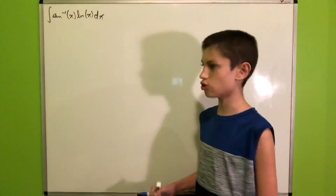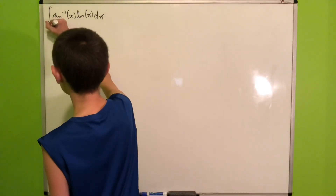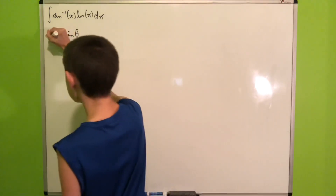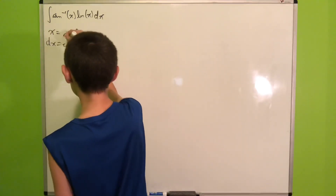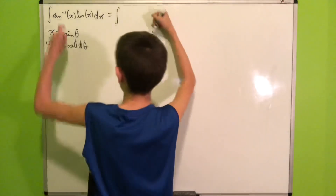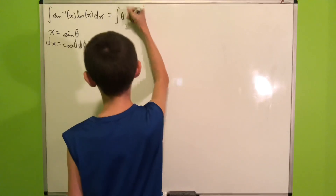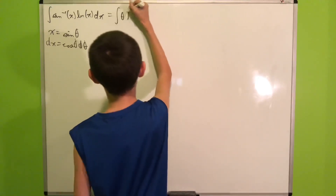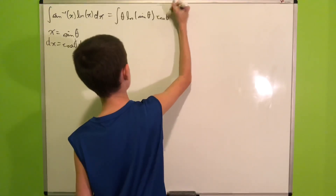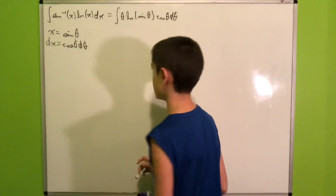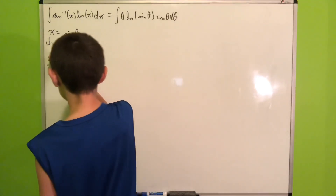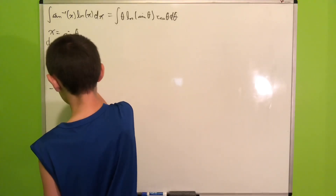Let's start this integral. First, I'd like to introduce a substitution: let x equal sine of θ, which means dx = cos θ dθ. Plugging everything in, arcsin(sin θ) becomes just θ, the natural log of x becomes natural log of sin θ, and our dx is cos θ dθ.